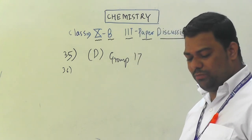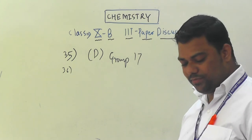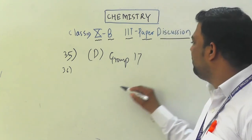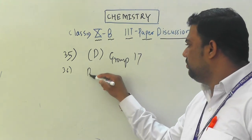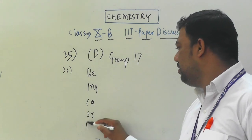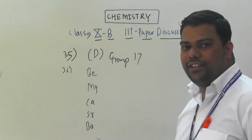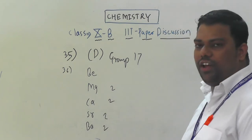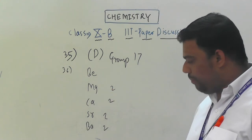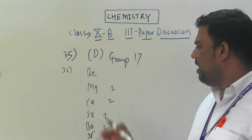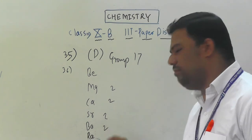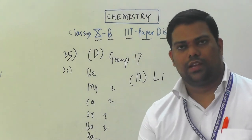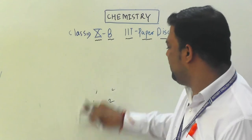Question number 36: the valence electronic configuration of Mg resembles which elements — except which one? Mg belongs to Group 2. Using the mnemonic 'Be Mg Ca Sr Ba Ra,' all have 2 valence electrons. They all show resemblance up to radium (Ra). The element listed that does not belong to Group 2 is lithium, so option D is correct — except lithium.